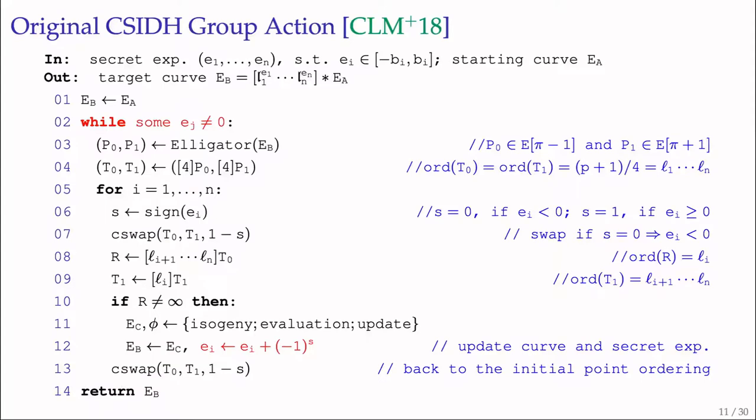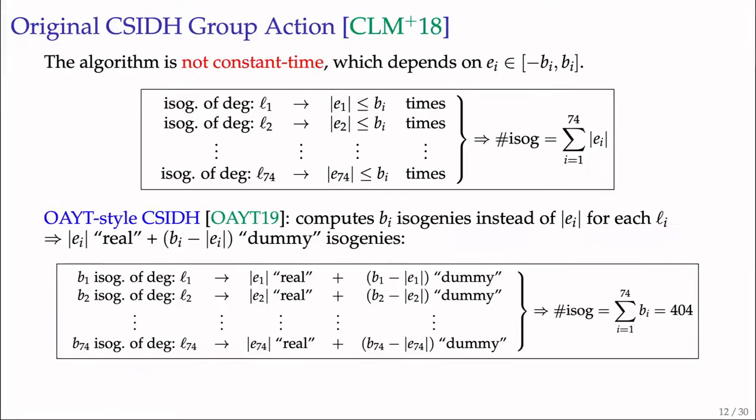Now I'll introduce our batched high-throughput implementation. The original CSIDH group action is not constant time because the number of isogenies to compute depends on the value of secret exponents, making execution time depend on secret information, therefore vulnerable to timing attacks. However, the OAYT-style CSIDH group action computes Bi isogenies instead of Ei for each prime Li - it computes Ei real isogenies and Bi minus Ei dummy isogenies. The total number of isogeny computations is always the sum of Bi, which equals 404 for CSIDH-512.